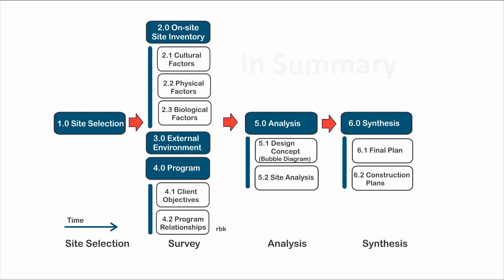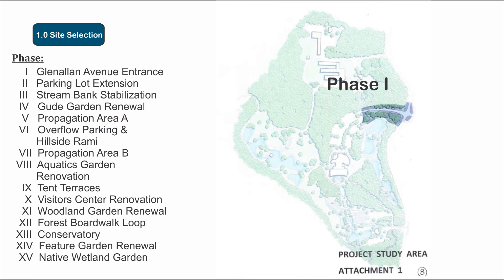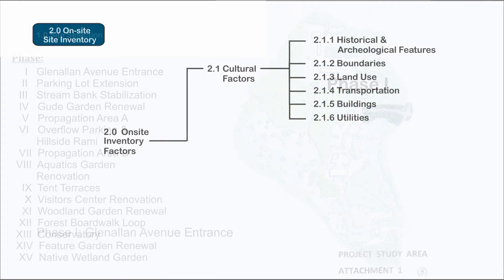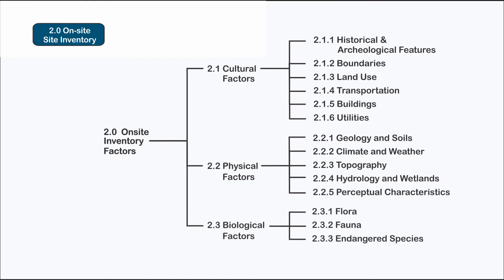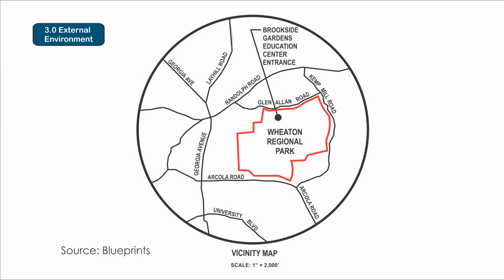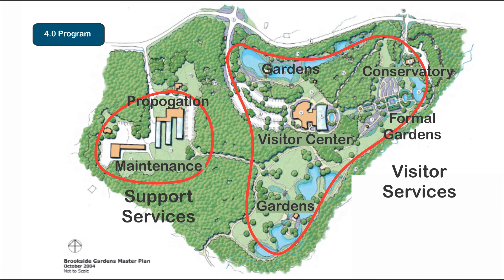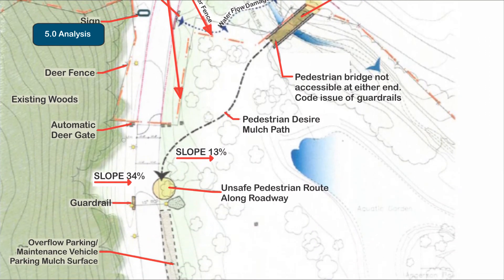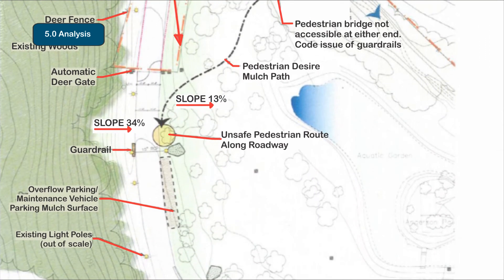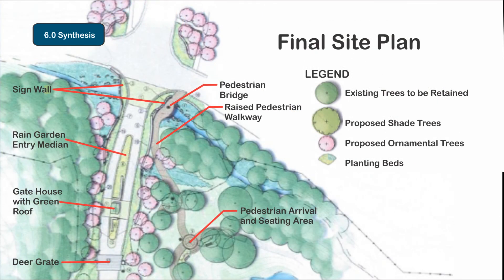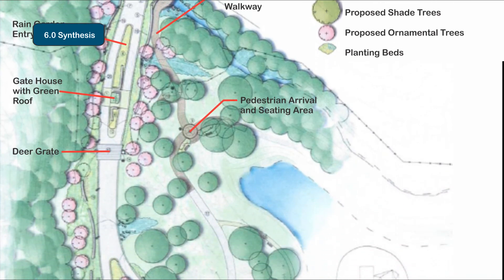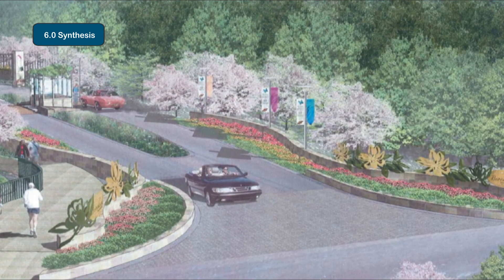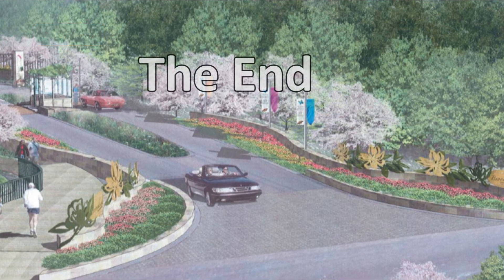In summary, the site development process is fairly straightforward. The site is identified and surveyed in terms of its resource capabilities and opportunities, external environment, and program opportunities. These factors are analyzed to identify relationships between major elements and to begin making conclusions and decisions regarding the final plan. The final plan is the synthesis of the process and may include construction blueprints. The site development process is foundational in designing the experience.